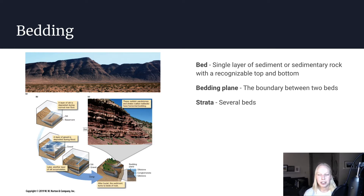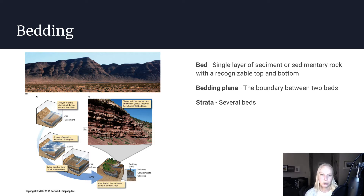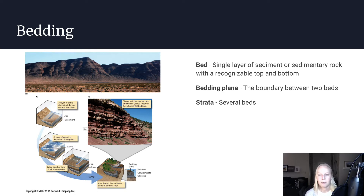The first sedimentary structure we're going to talk about is really important — it's called bedding. This is based off the principle of horizontality, which is the idea that sedimentary rocks are laid down flat at the start of their life. All sorts of things can happen to sedimentary rocks over time — they can get folded, they can get faulted — but generally they are laid down flat to begin with. A single bed is a single layer of sediment or sedimentary rock with a recognizable top and bottom.